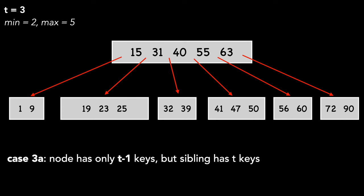Finally, in case 3a, the node with the key we want to delete has only T minus 1 keys, but its sibling has T keys. Let's delete key 9 to show this.